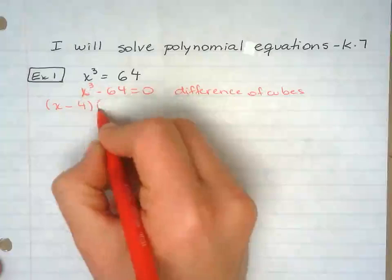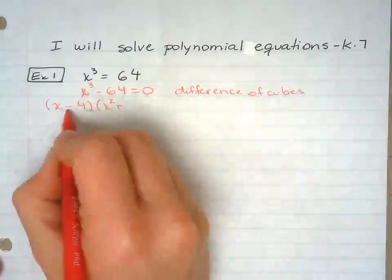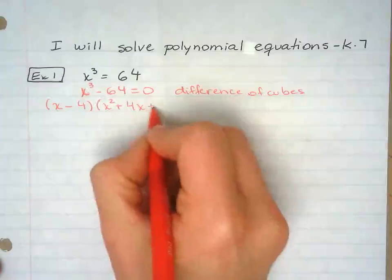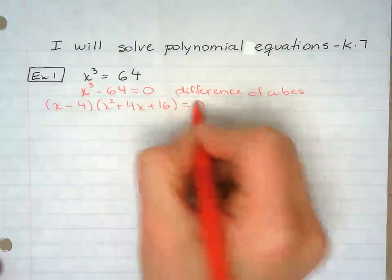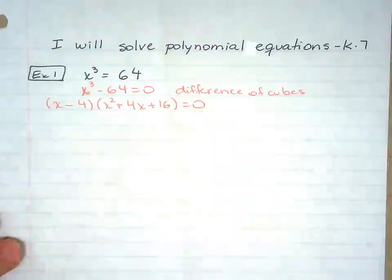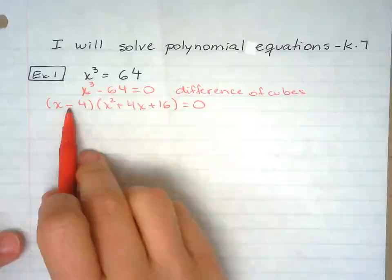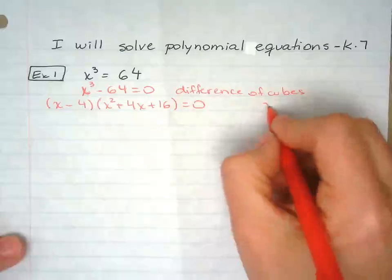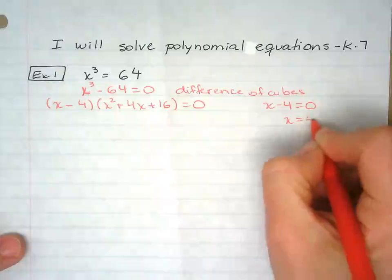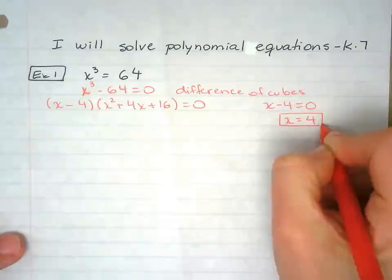And then you square the first, you switch the sign, you multiply those, and then you square the last. Now at this point we have two terms, we're going to set them equal to zero. This one is pretty easy, so I know that x minus 4 equals zero, this one will give me x equals 4. So that is my first answer.